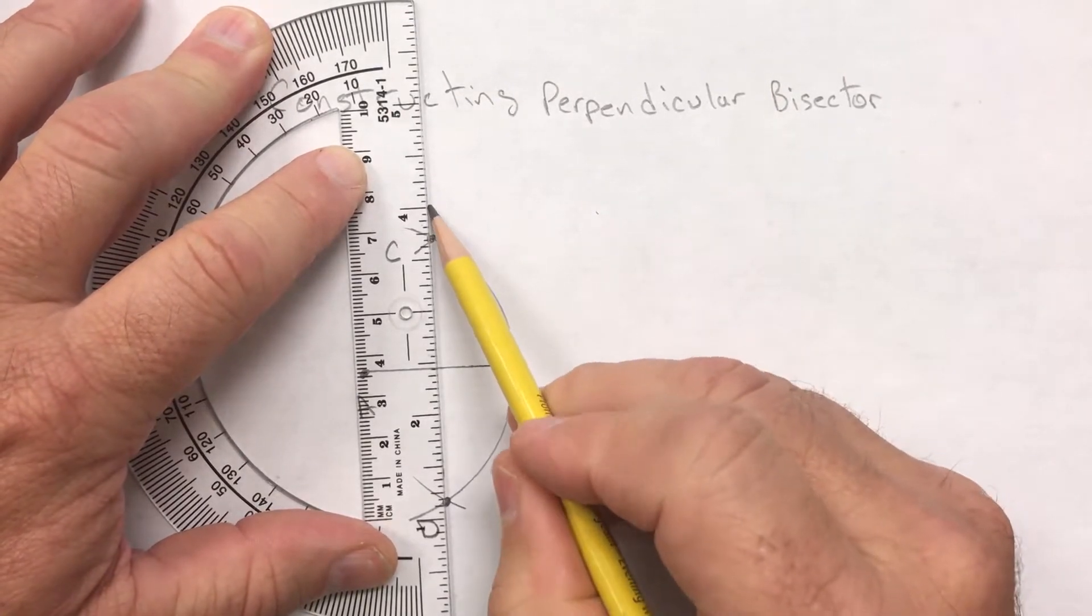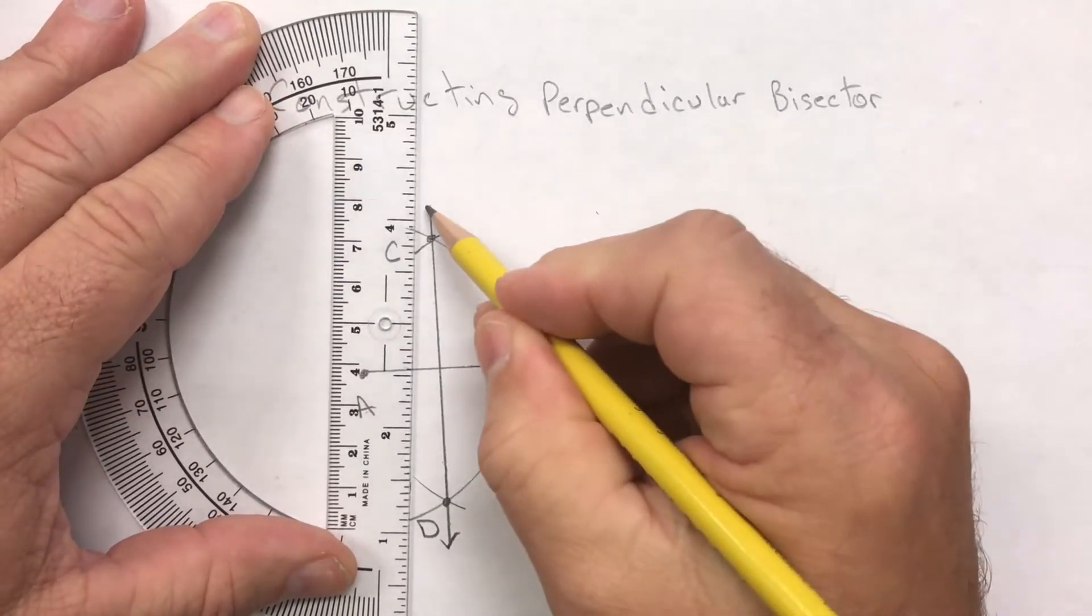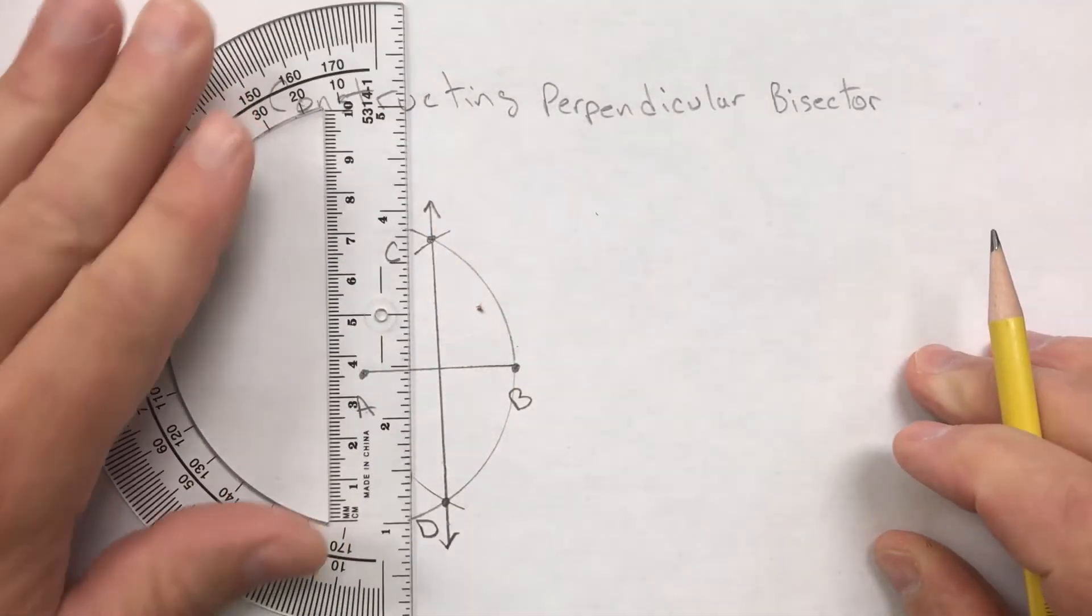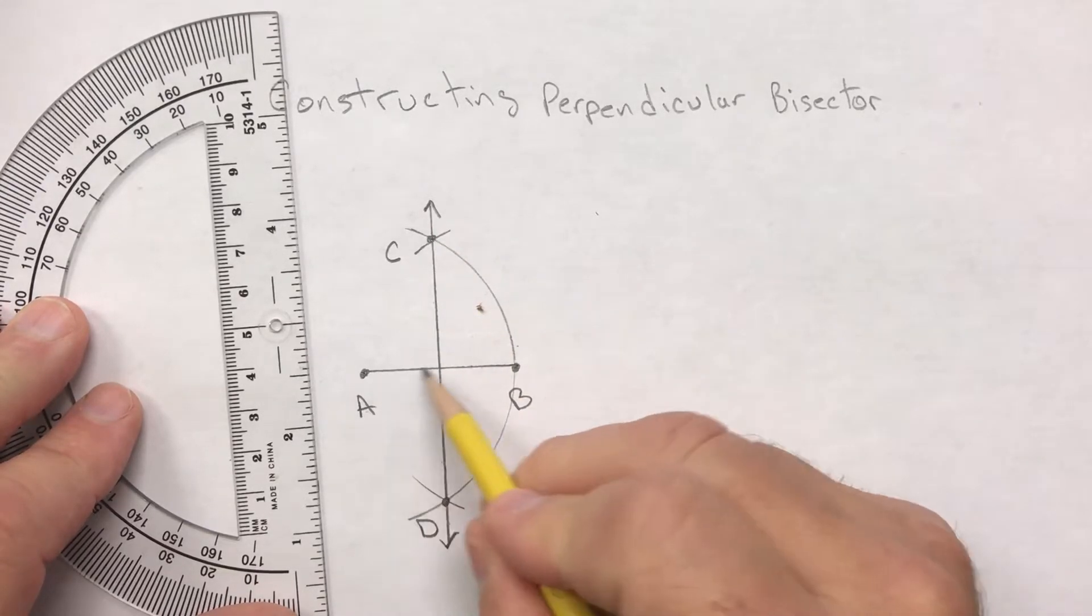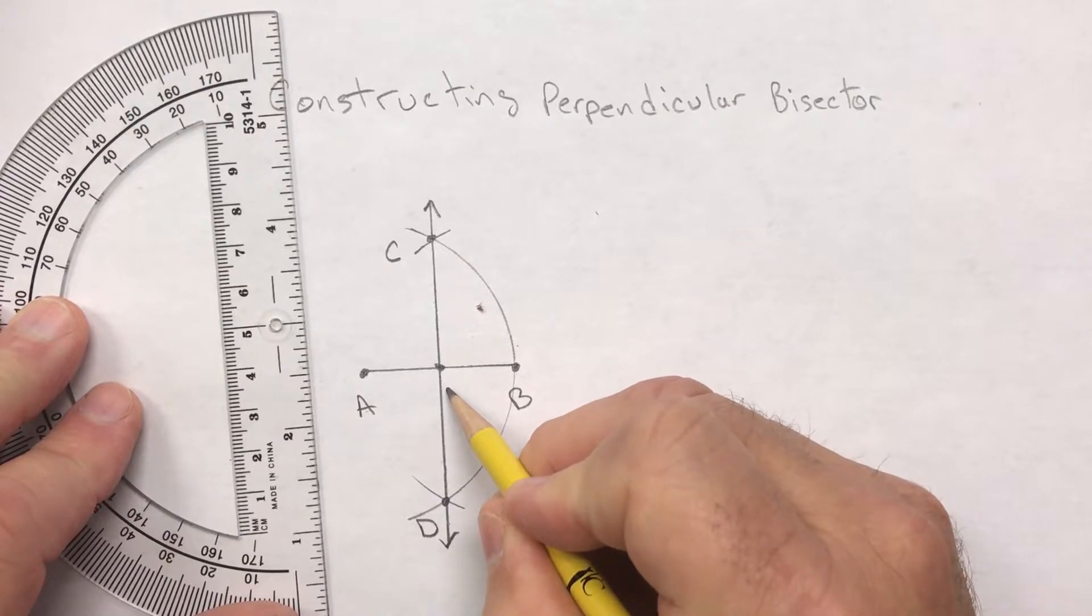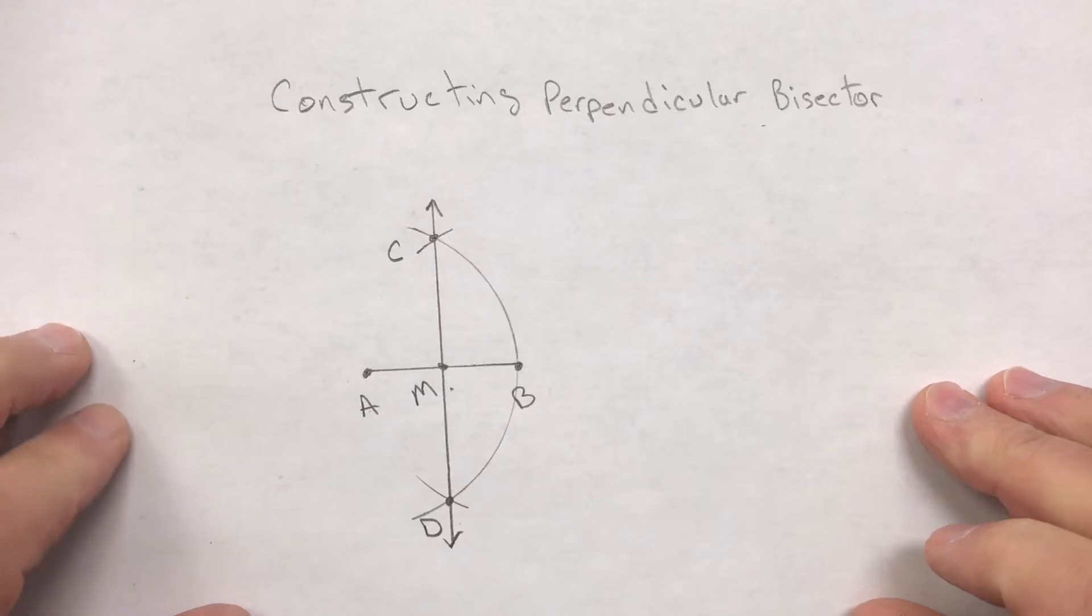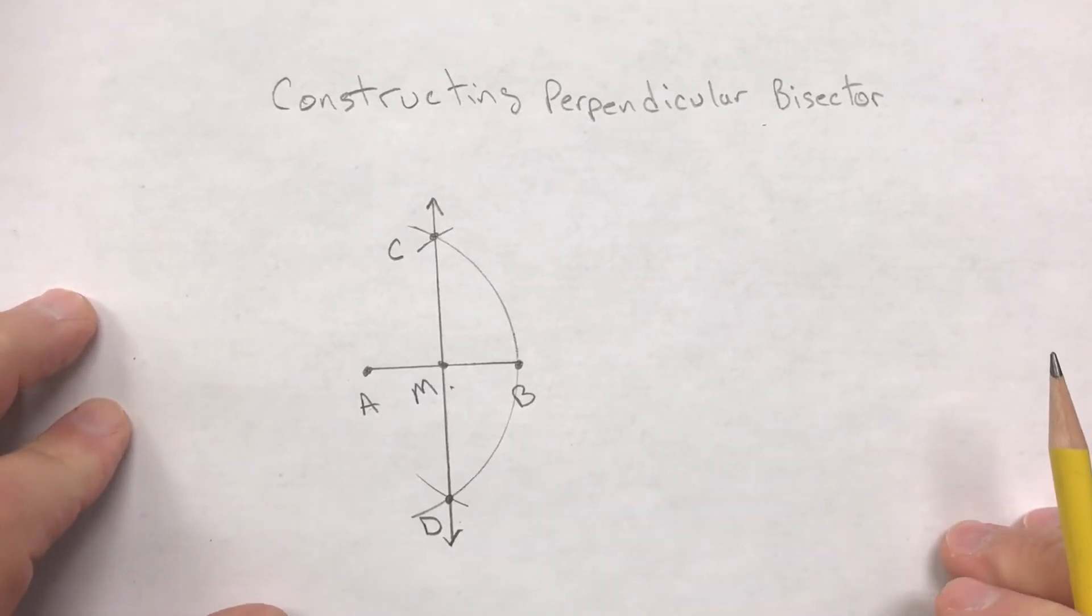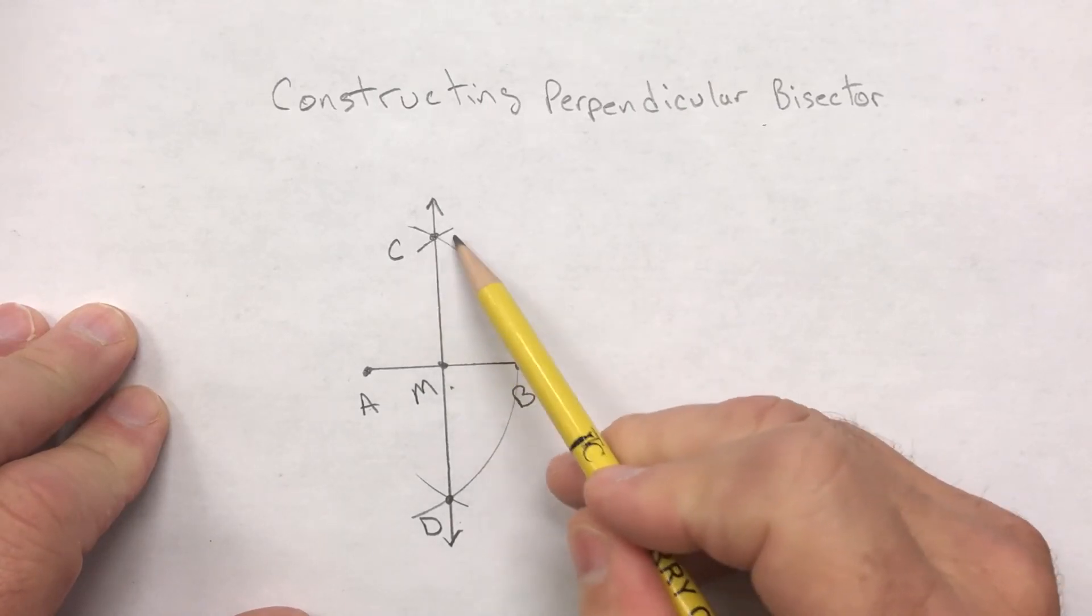Label the point where line CD intersects AB as point M. You have just created a perpendicular bisector. That's what a perpendicular bisector looks like with these arcs.